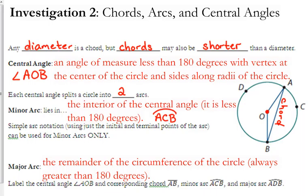Now, for minor arcs, you can use just the first and the last point of the arc. So you could also name that arc AB. Anytime you see just two points, you know that it's the shortest distance between points A and B. Because obviously, you can go two directions from A to get to B. You can go to the right or you can go to the left.